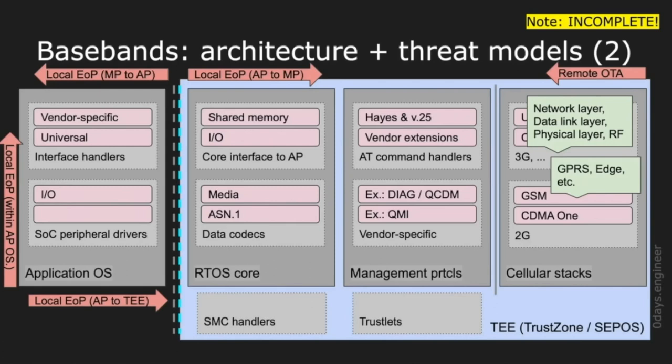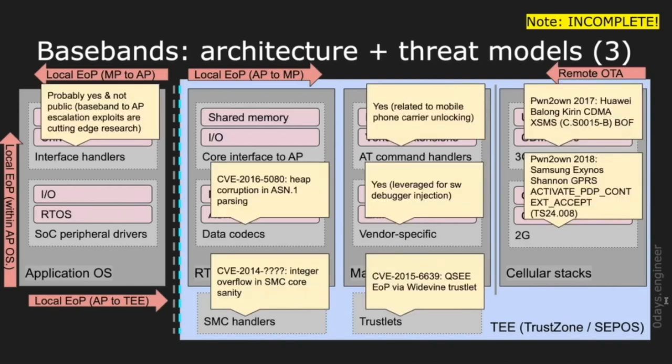The diagram also includes information about data codecs. These are directly accessible from the cellular stacks, especially ASN.1, where I have seen some bugs reachable from the over-the-air interface. The diagram also shows some examples of vulnerabilities, which I will not discuss in detail here, but the ones from Panopticon you can find write-ups for on the internet.